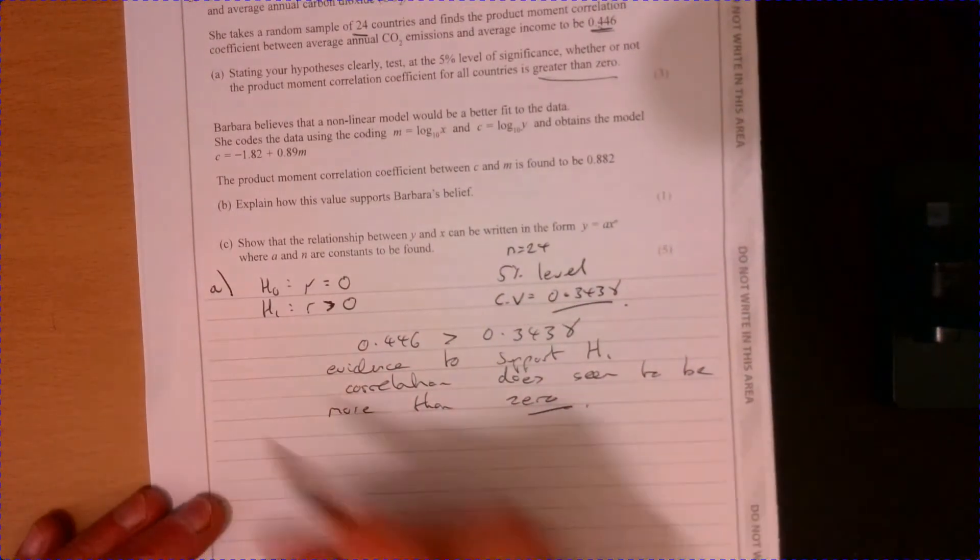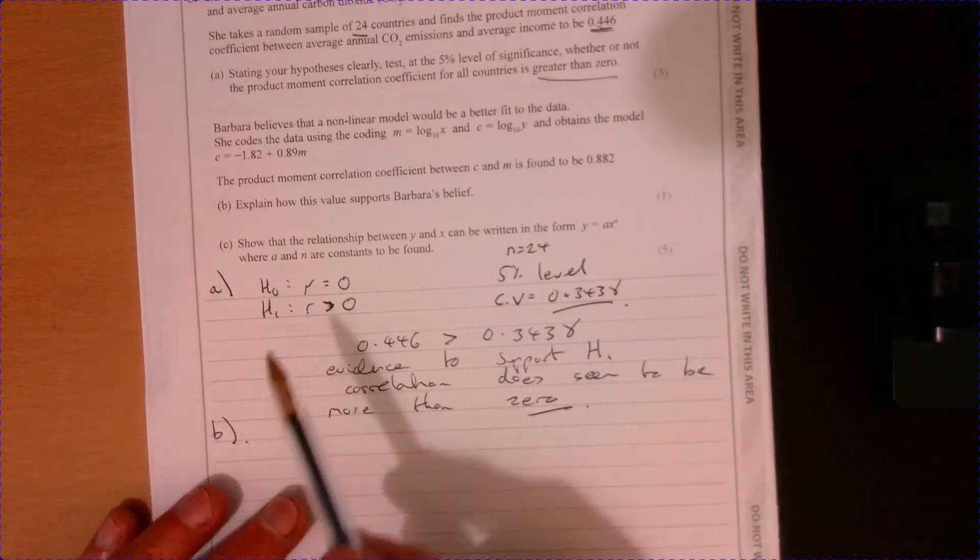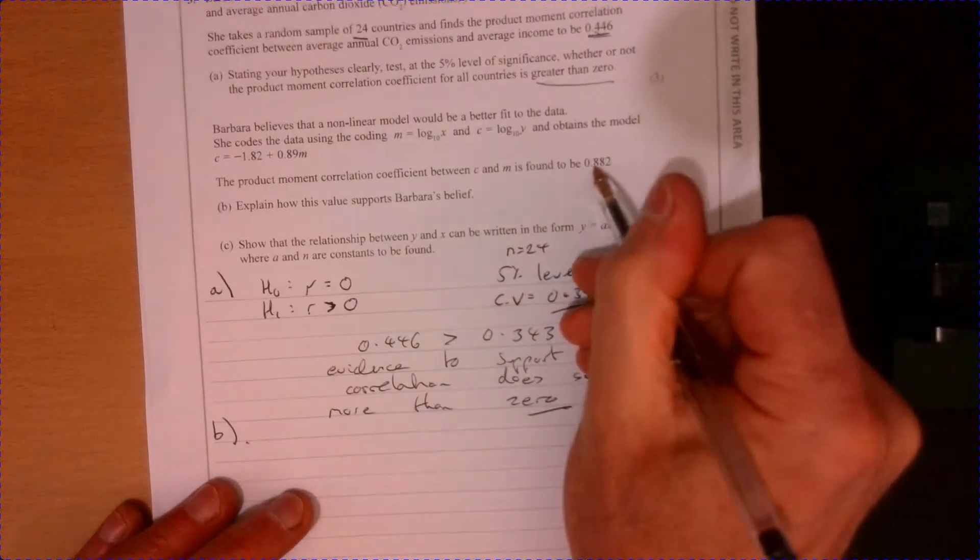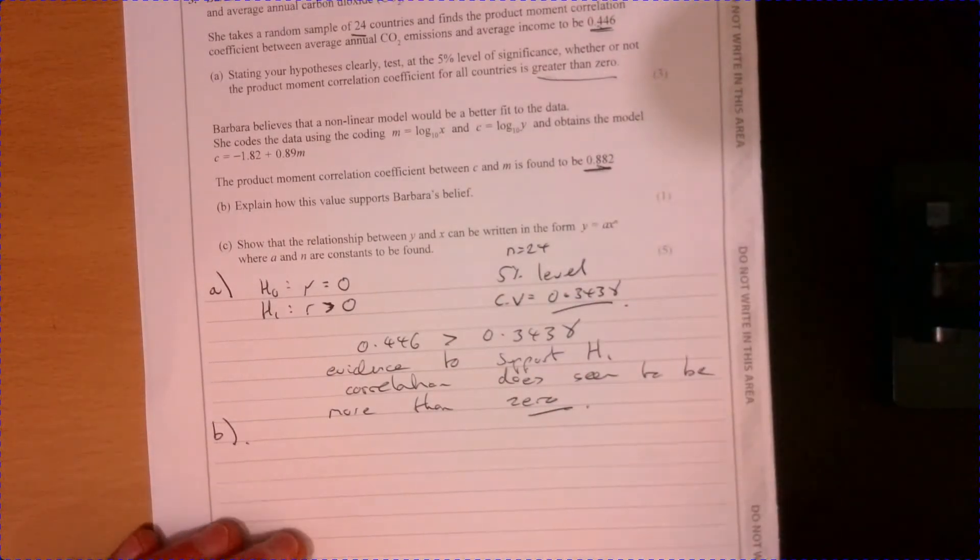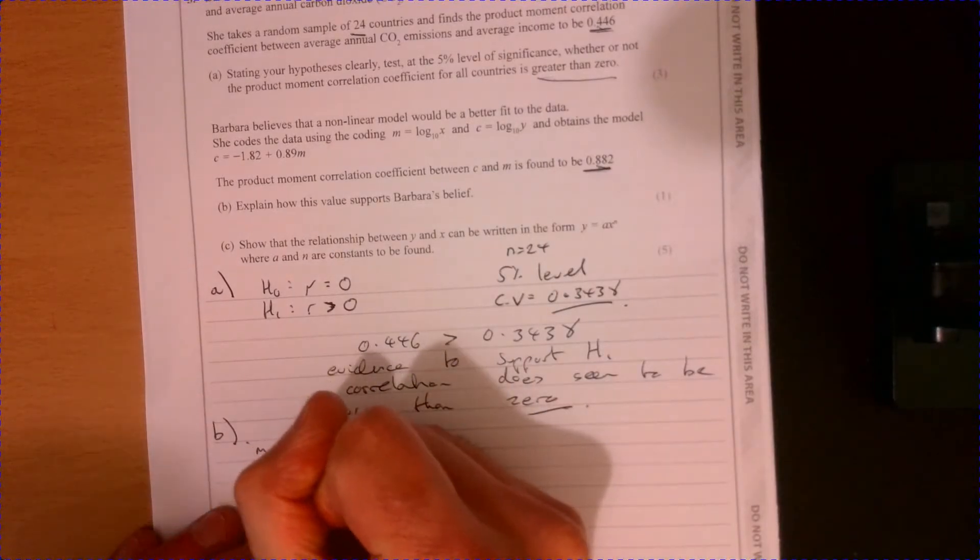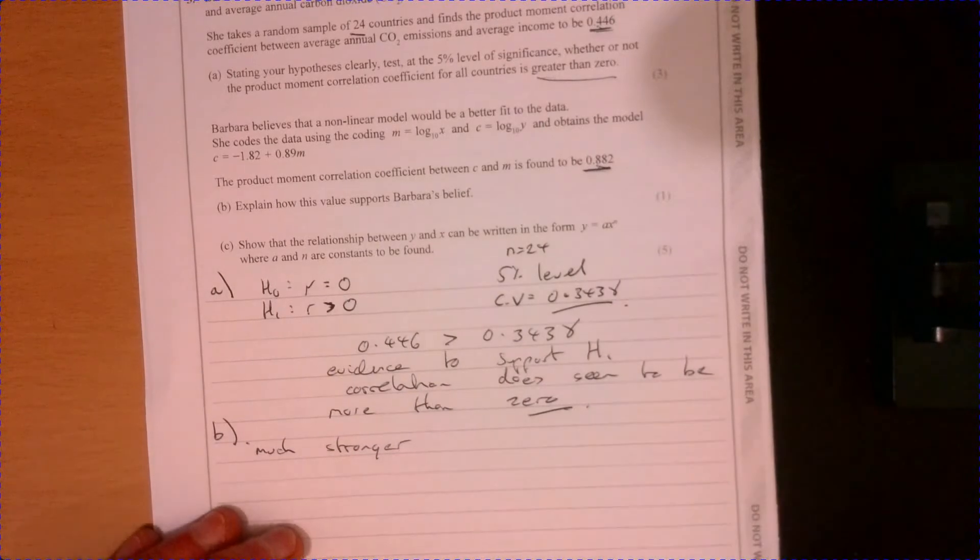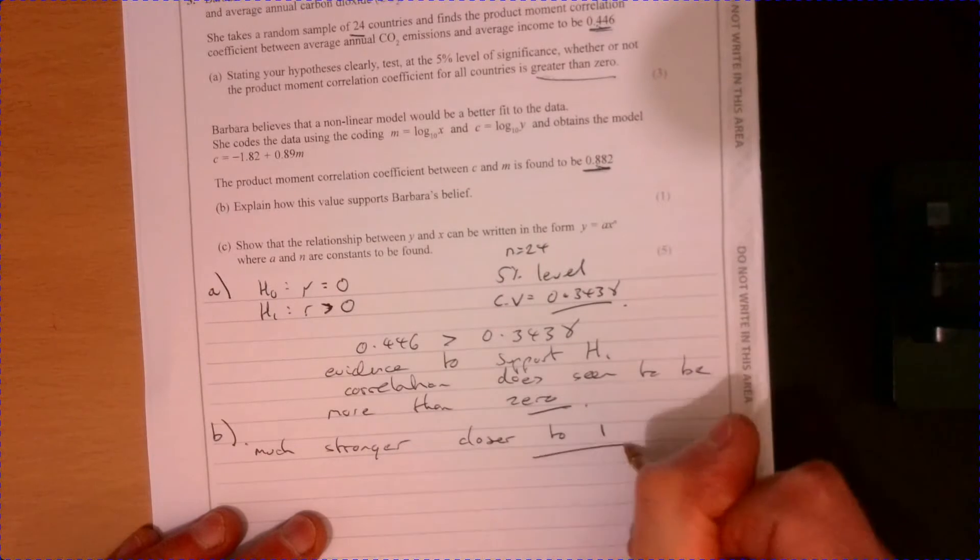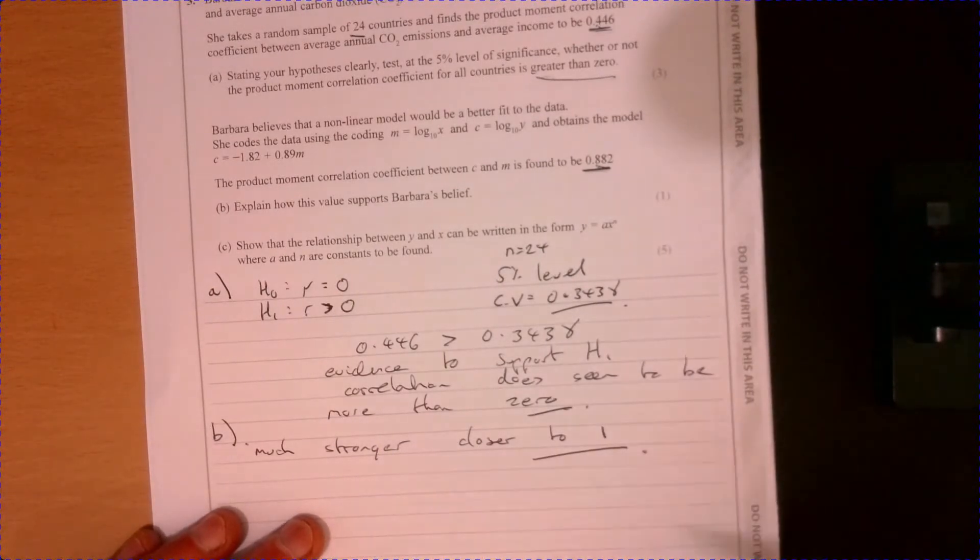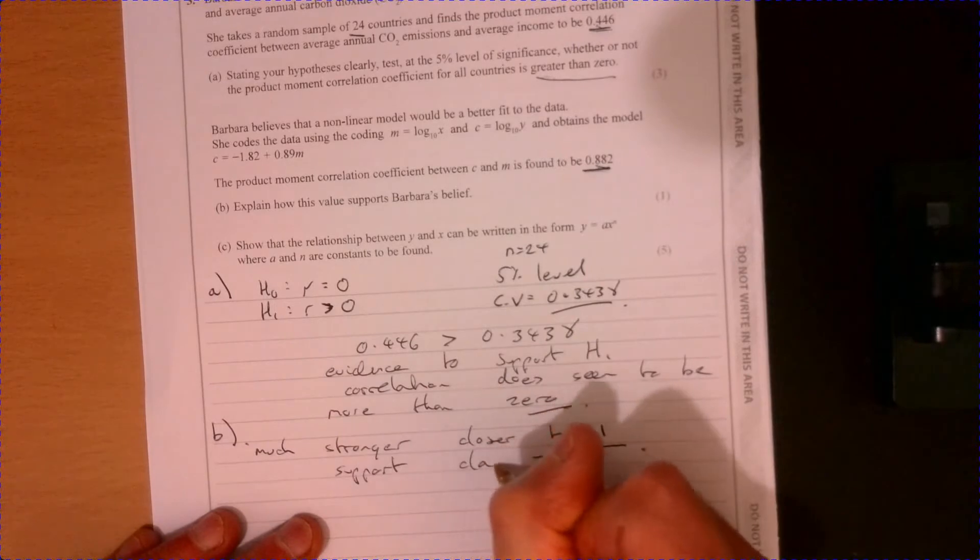Now on to the next part of the question. So on to part B. So what we're told here is that correlation 0.882. Well, that's much stronger, isn't it? It's much stronger than what we've had before. It's closer to 1. It's much closer to 1. So I would suggest it does support the claim.